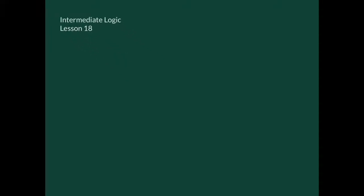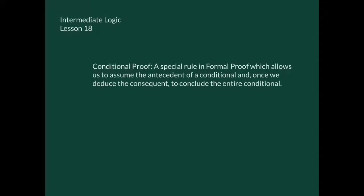Hi, welcome to intermediate logic lesson 18. We're looking at conditional proofs. What is a conditional proof? It is a special rule in formal proof which allows us to assume the antecedent of a conditional. And once we deduce the consequent, to conclude the entire conditional. So what does that mean? Basically, I hope you remember what the antecedent is. So if I have a statement such as, if L,